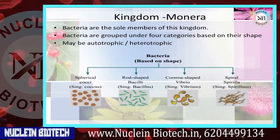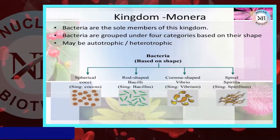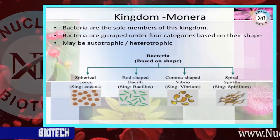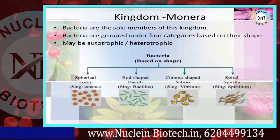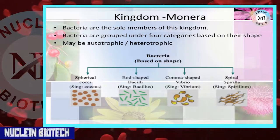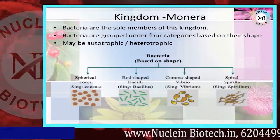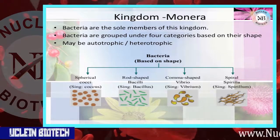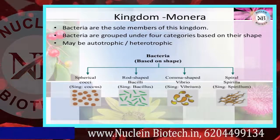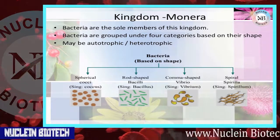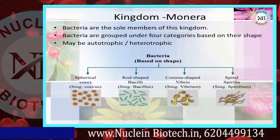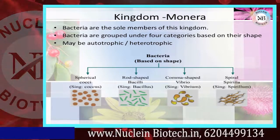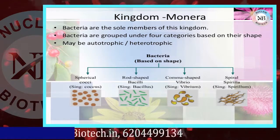Bacteria are the sole members of Kingdom Monera. Bacteria are grouped under four categories based on their shape. Bacteria may be autotrophic or heterotrophic. Autotrophic means they produce their own food, whereas heterotrophs do not produce their own food.